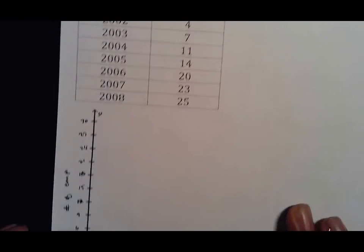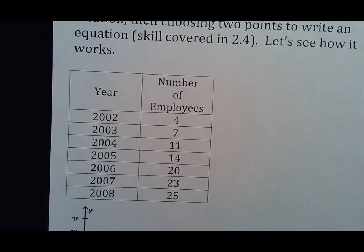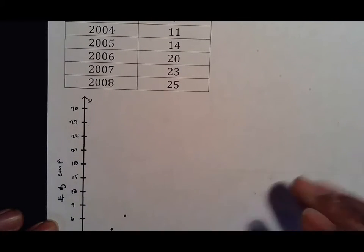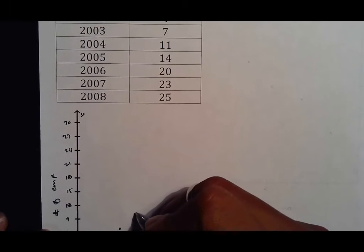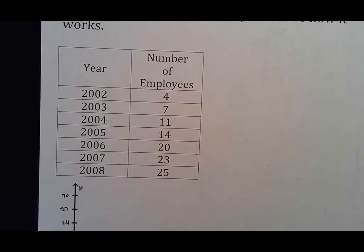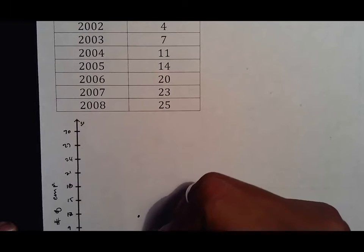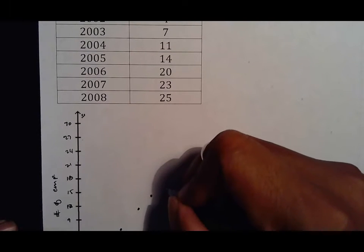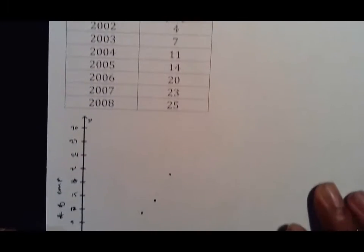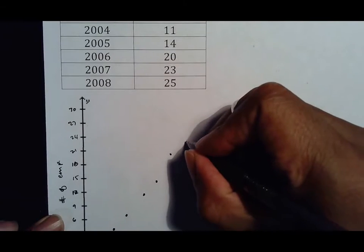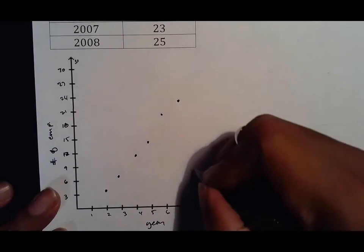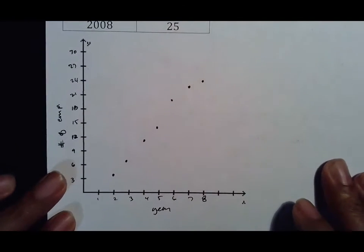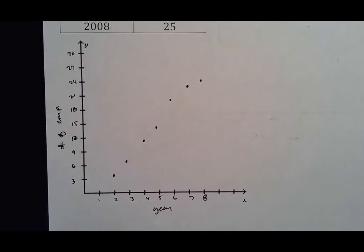Making the scatter plot, 2002 goes to 4, so 2 goes to somewhere slightly above 3. 2003 goes to 7, so we go slightly above 6. 2004 goes to 11, so 4 up to right below 12. 2005 goes to 14, so slightly below 15. 2006 is 20, so slightly below 21. 2007 is 23, so right below 24. And 2008 is 25, so slightly above 24. That is going in a positive direction.